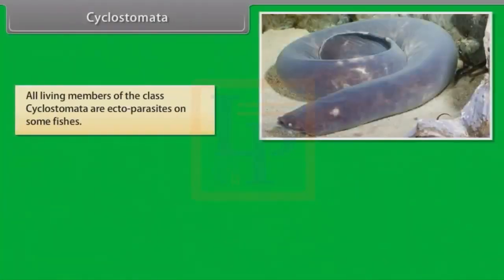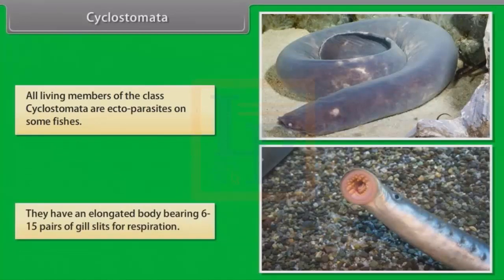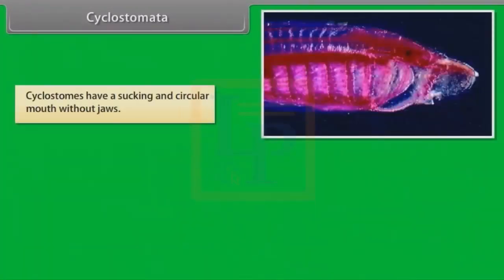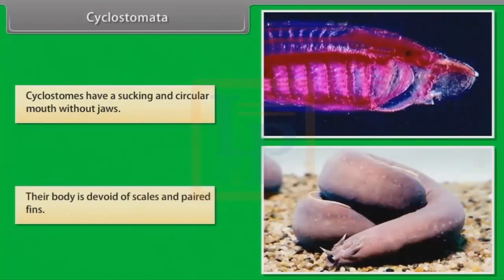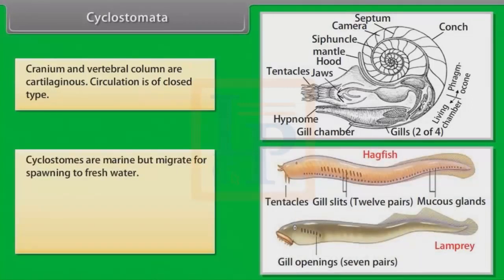All living members of the class Cyclostomata are ectoparasites on some fishes. They have an elongated body bearing six to fifteen pairs of gill slits for respiration. Cyclostomes have a sucking and circular mouth without jaws. Their body is devoid of scales and paired fins. Cranium and vertebral column are cartilaginous. Circulation is of closed type. Cyclostomes are marine but migrate for spawning to fresh water.